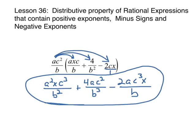I found this illustration online. When I say AC squared times AXC, I'm going to get A squared because A times A is A squared. C is going to be cubed, and then I've got that X. And then B times B is B squared.